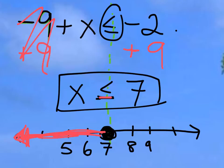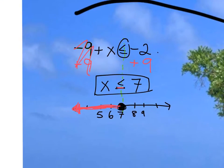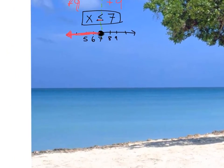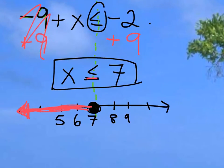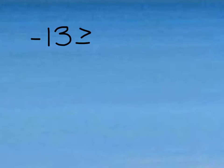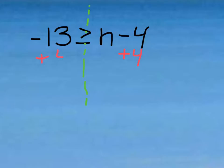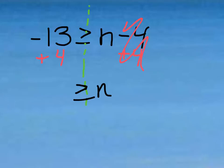For the next example, we're going to look at something slightly different that often confuses students — that is when the variable is on the right side of the inequality, because quite often we're used to it being on the left side. Let's try question number 4 from the worksheet: negative 13 is greater than or equal to n minus 4. So to get n by itself, I'm going to get rid of this minus 4 by adding 4 to both sides, cancelling that out. We're left with n on the right side, and on the left side negative 13 plus 4 would be negative 9.